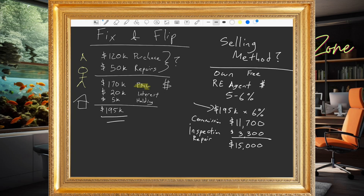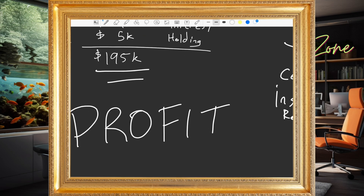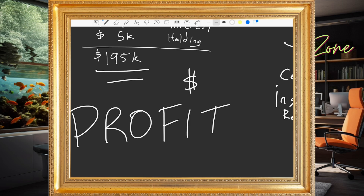Nobody in their right mind would sell for $195,000 if you're all in for $195,000. So you have to ask yourself: how much do you want to make in profit? That is the number one question, and probably what you need to start with — how much money do you actually want to make based on how much effort this is going to take?